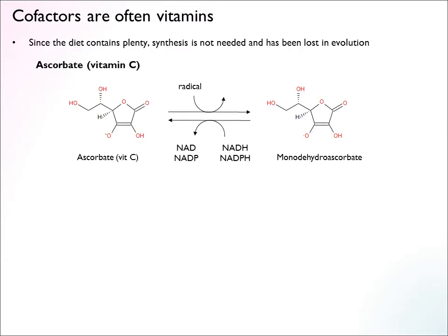Because cofactors are not required in large amounts, they tend to be vitamins. The reasoning is that since the diet contains more cofactors than the average body will use, de novo synthesis is rarely needed. Unless there is dietary deficiency, you usually don't have to synthesize cofactors in large amounts. Therefore, these synthesis enzymes were not very important to animals and have been lost at some point in evolution — so cofactors are usually vitamins because we can no longer synthesize them.